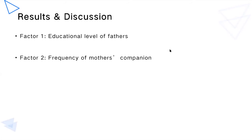The second factor is the frequency of the mother's companionship. Similar to factor one, the higher the frequency that the mother accompanies the student, the higher their career maturity will be. A possible explanation is that the more frequently a student stays with his or her mother, the more potentially he or she can acquire experienced career guidance. The amount of time and conversation shared with parents increases the possibility of acquiring more career information.